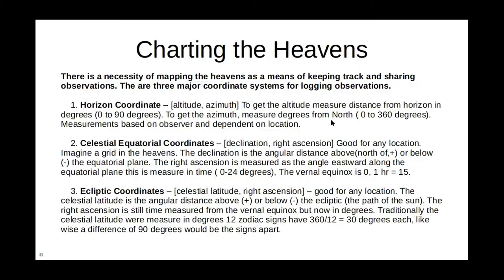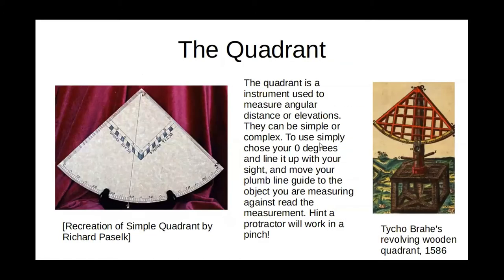Now, before we get into the quadrant — are there any questions or comments? The quadrant is an instrument used to determine the angular distance or elevation, so you can use it to measure degrees of things. This is a recreation of the one from the site I was talking about last time — who does the nocturnals and other instruments as well — Richard Pasisk. This is one he made.